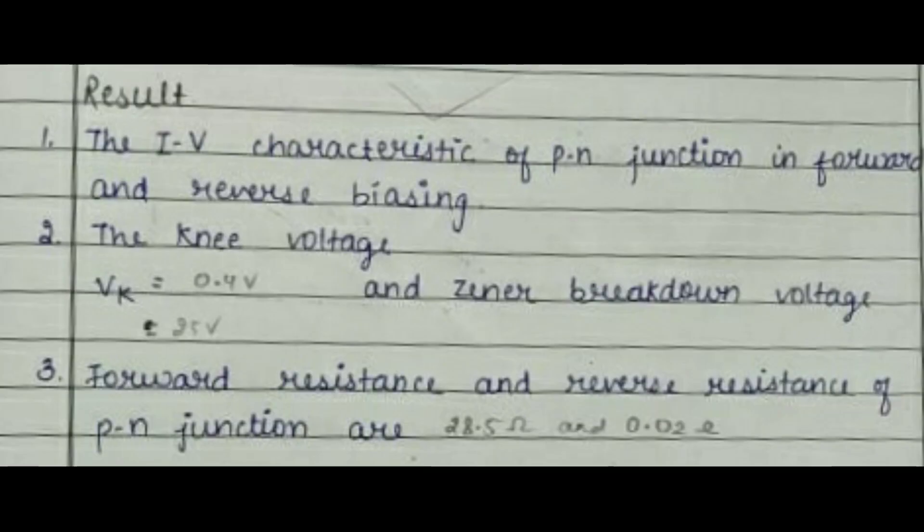This image shows the result obtained after the practical is complete. The voltage and current characteristics of the PN junction in forward and reverse biasing show that the knee voltage Vk is 0.4 volts and the Zener breakdown voltage is 25 volts. The forward resistance and reverse resistance of the diode are 28.5 ohms and 0.02 ohms respectively.